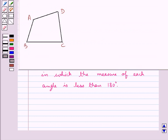This ABCD is a convex quadrilateral since the measure of each angle is less than 180 degrees.